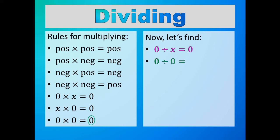Zero divided by zero: in this equation, I circled the product of zero, I circled one of the numbers being multiplied of zero, and I circled the leftover zero. We could have looked at this equation a different way — here's the product of zero, circling the first zero as one of the numbers being multiplied and the second zero as the leftover number being multiplied. So from this equation, you would think that zero divided by zero is zero. However, let's look at the fifth and sixth equations.